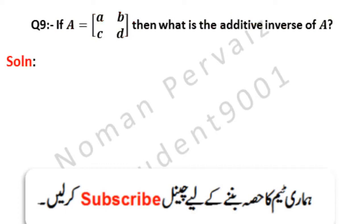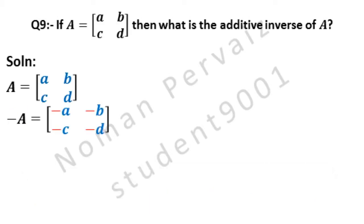Let's see its solution. We are taking the question as it is. The additive inverse of A is minus A. The additive inverse of any matrix is obtained by changing its positive elements to negative and negative elements to positive. So A becomes minus A, B becomes minus B, C becomes minus C, and D becomes minus D.